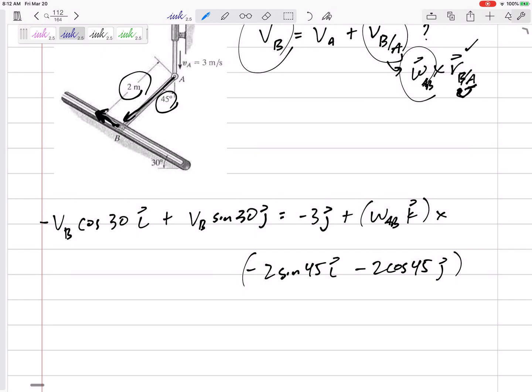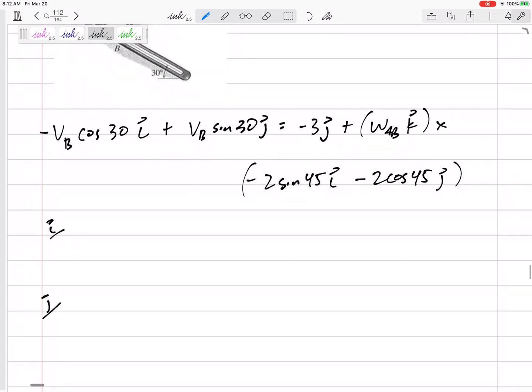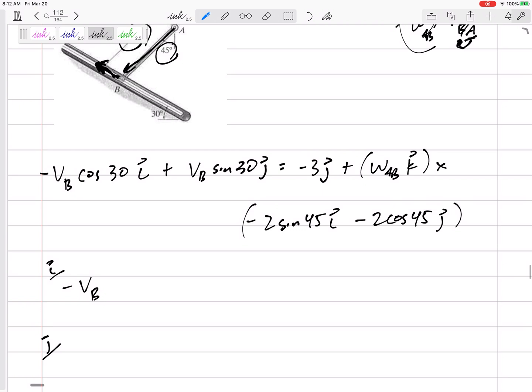You can leave this sine 45 cosine 45—yeah, let's just do that. There's my equation, and I've got two unknowns: V_B, the magnitude of V_B, and omega_AB. Let's go to my i and j equation. What do I have on the left-hand side? Negative V_B. Which one of these is going to show up in my i equation? This one.